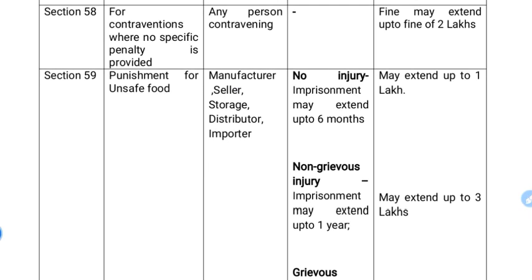Section 58 covers cases where no specific penalty is provided. If any person is contravening a provision for which no specific penalty is given, the fine will be up to ₹2 lakhs.